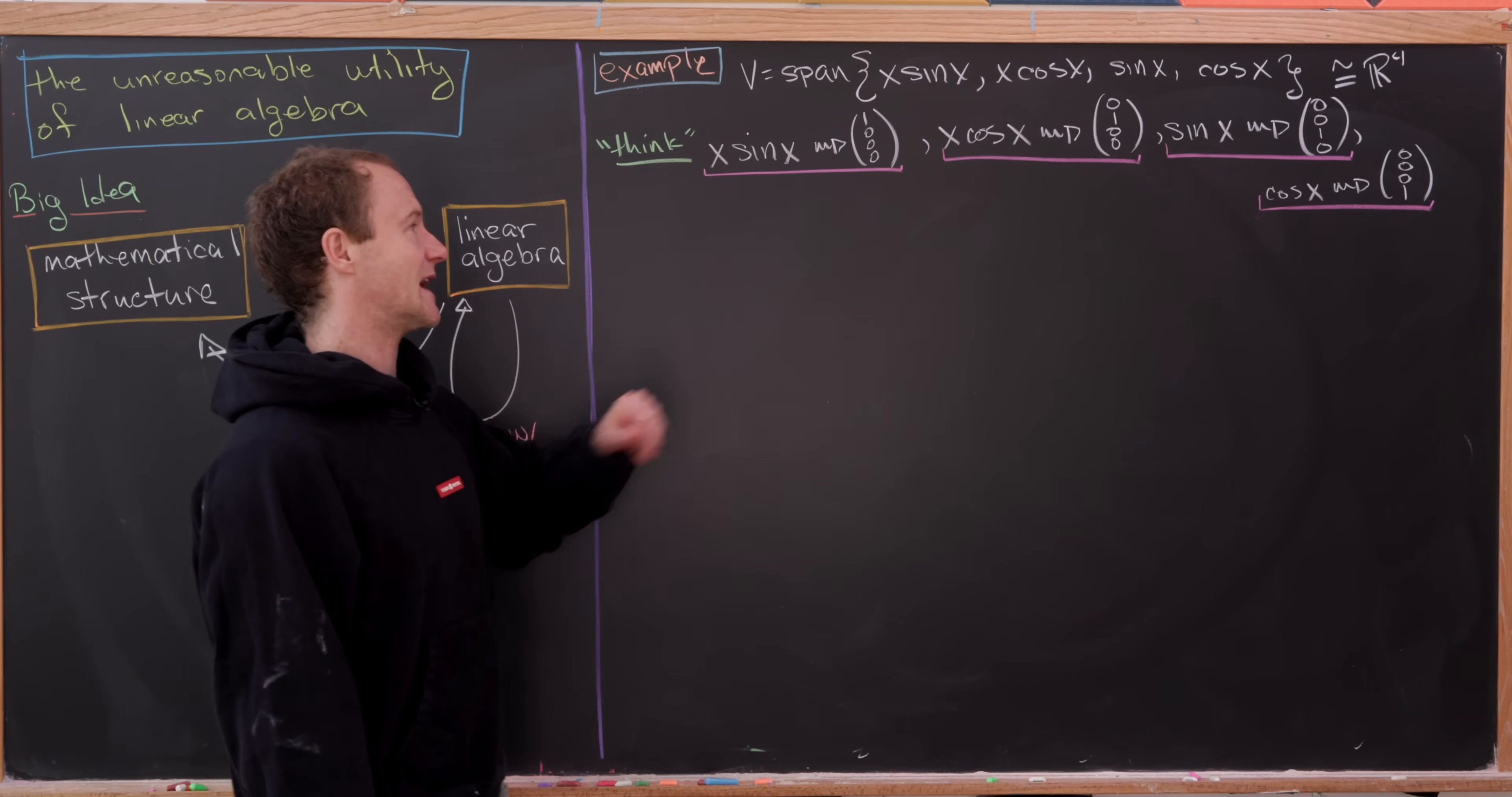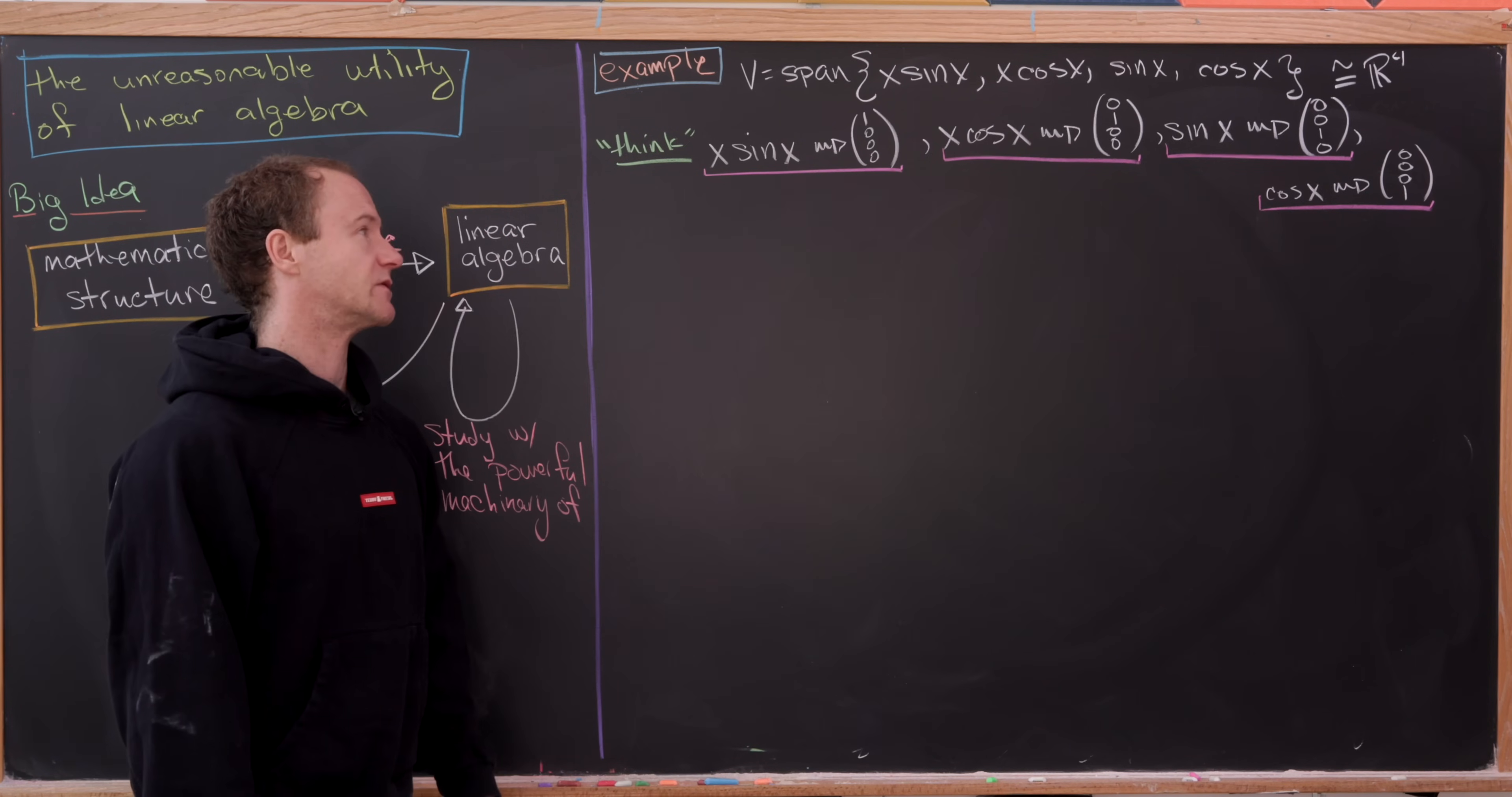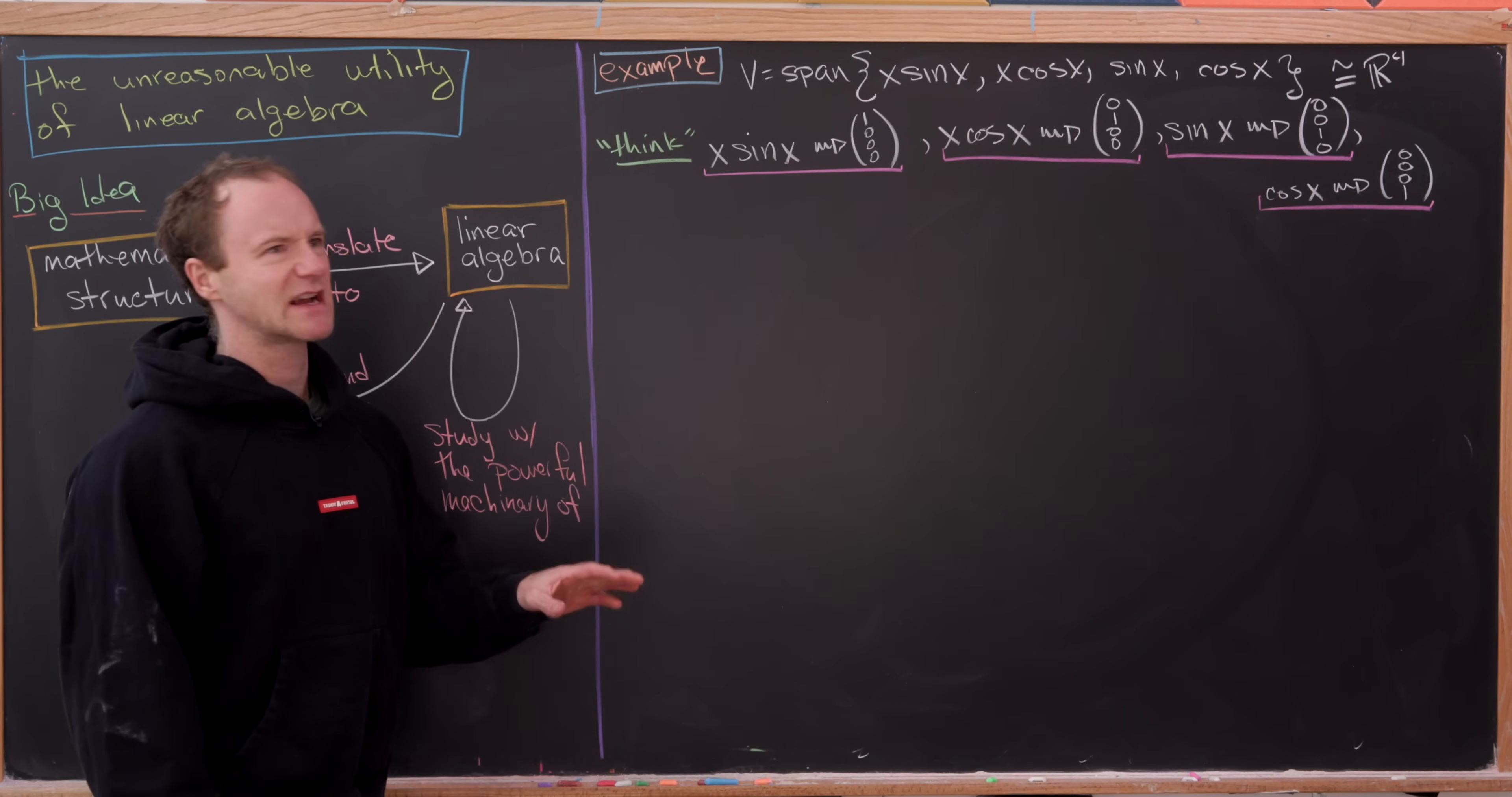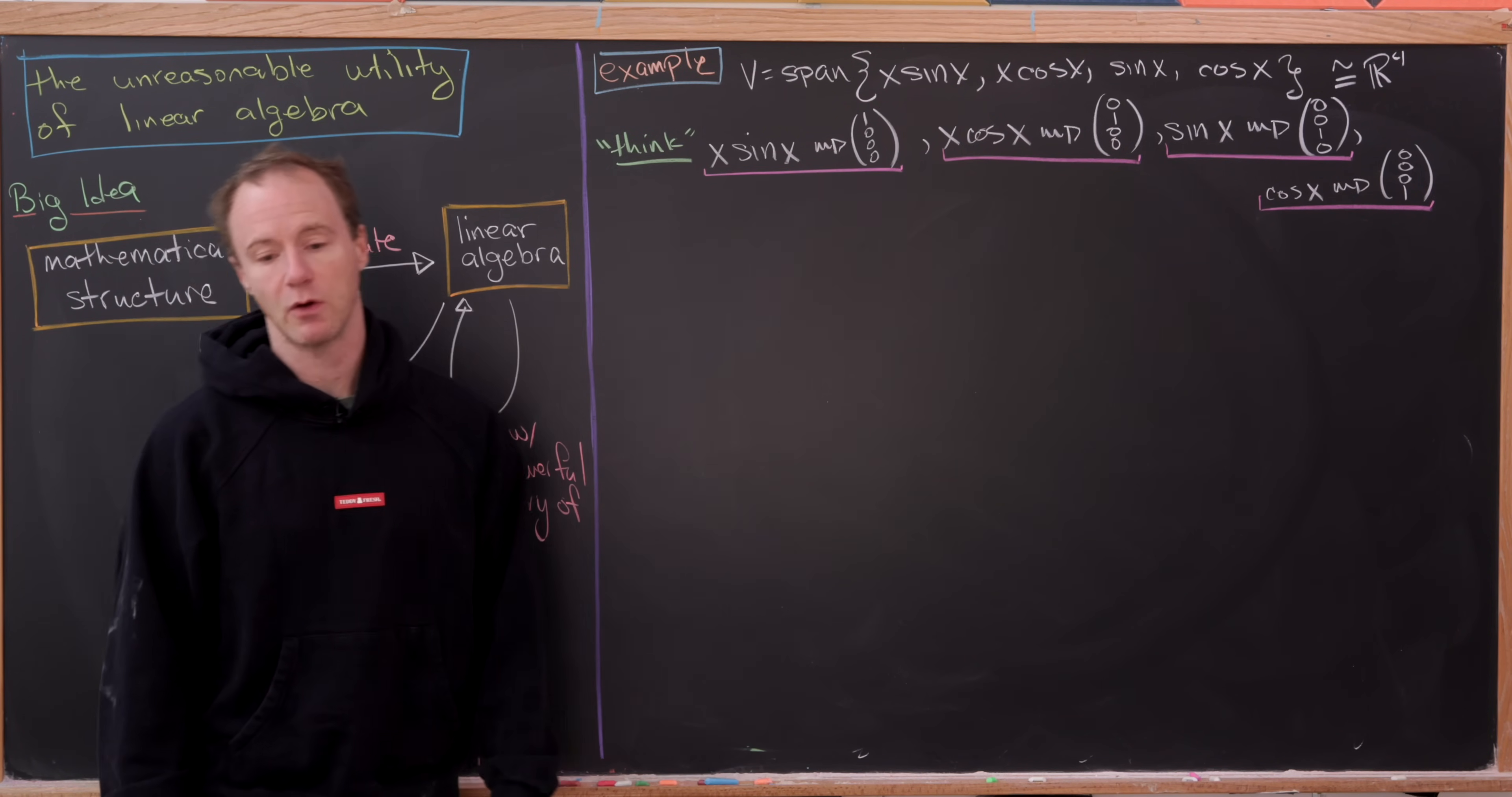So x sine x is assigned to, well, sometimes that's called the vector E1, so it's 1, 0, 0, 0. Then x cosine of x is the next standard basis vector, 0, 1, 0, 0. Sine x will assign to 0, 0, 1, 0. And finally, cosine x will assign to 0, 0, 0, 1.